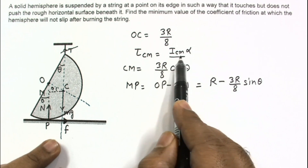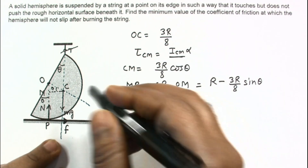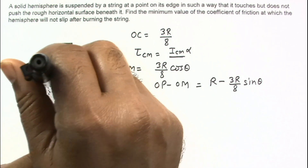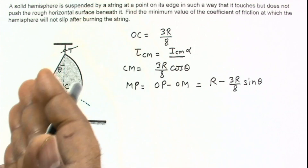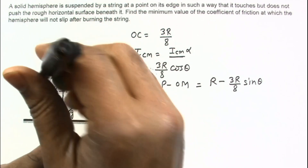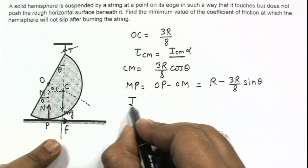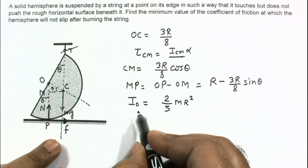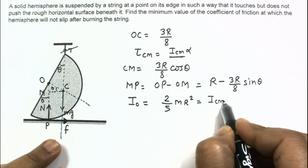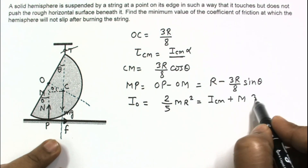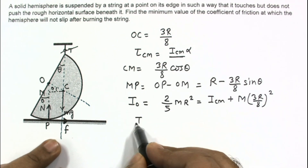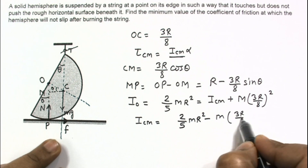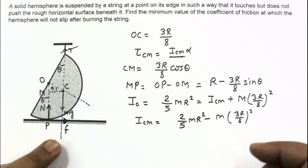To calculate the moment of inertia about the center of mass, we use the parallel axis theorem. The moment of inertia of a solid hemisphere about the axis through the center of curvature O is (2/5)mr². By the parallel axis theorem: I_O = I_CM + m(3r/8)², so I_CM = (2/5)mr² − m(3r/8)².